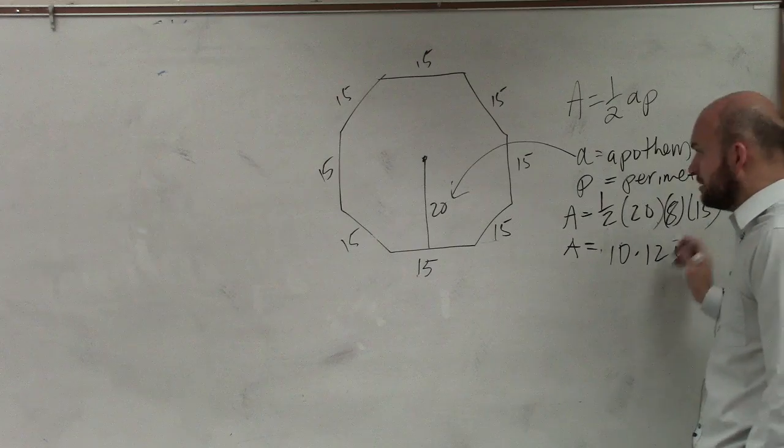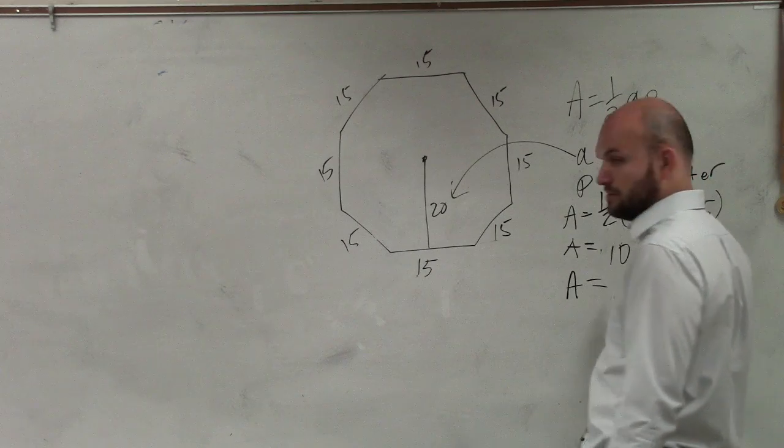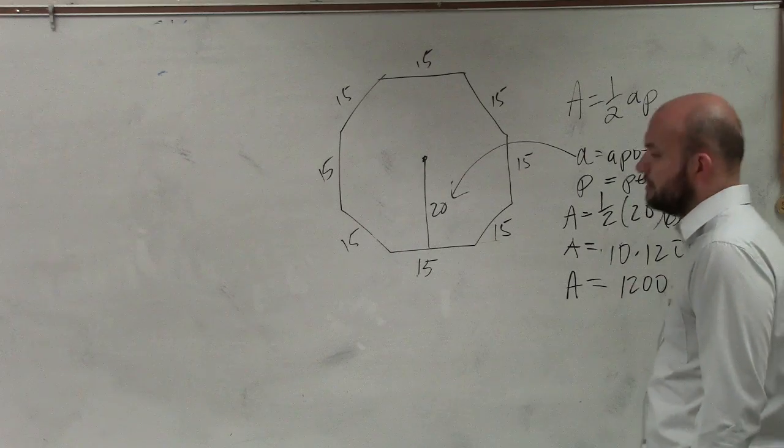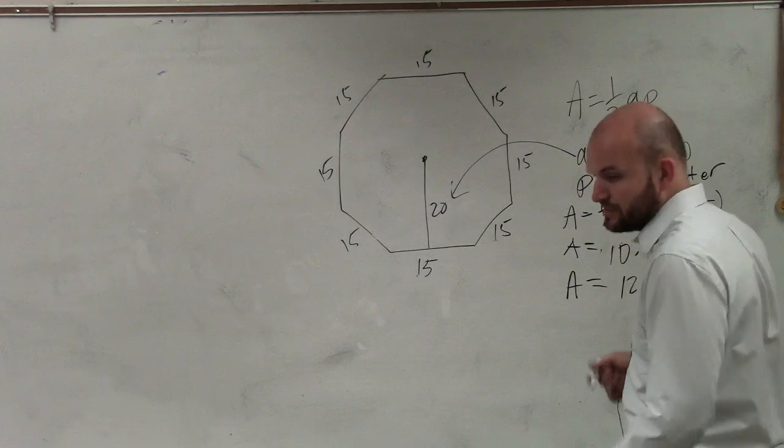And therefore, double up the zeros. A equals 1,200. Oh, I didn't give any units, but that'll be OK.